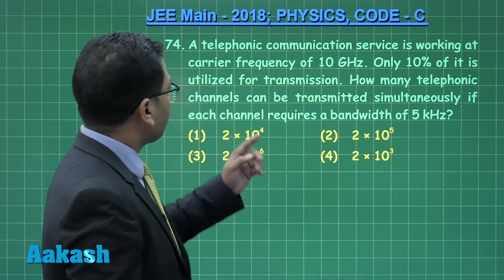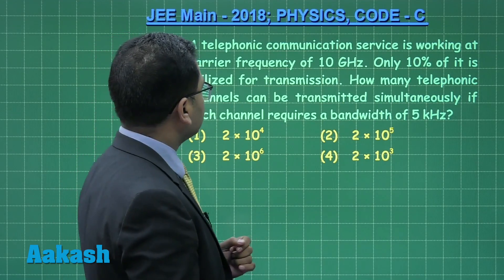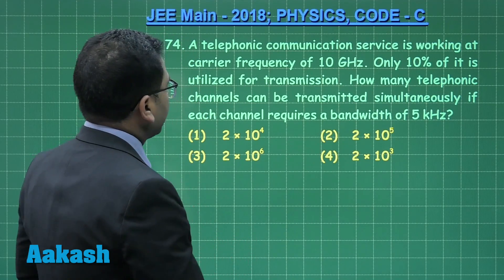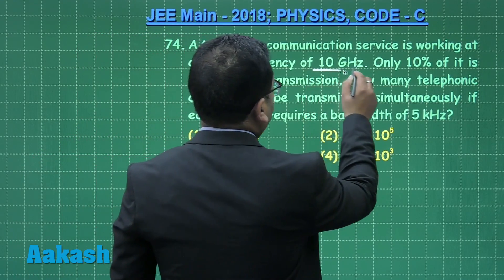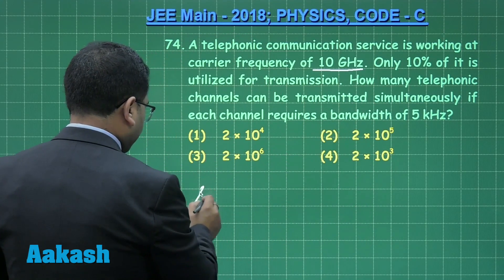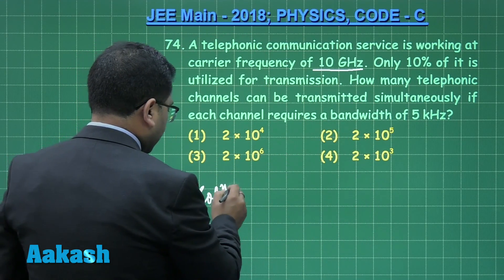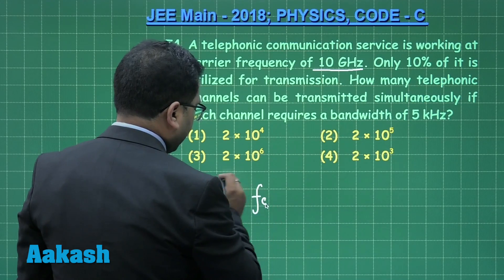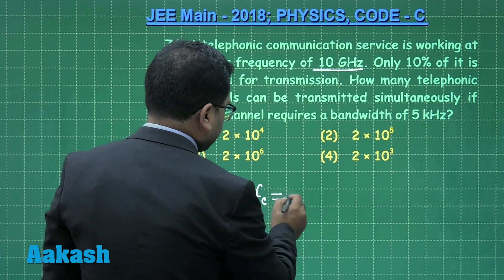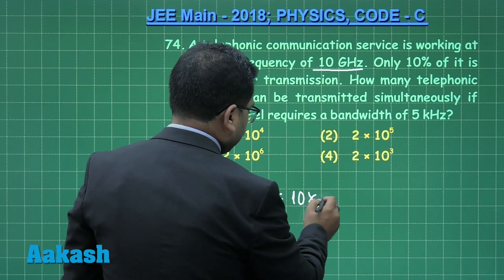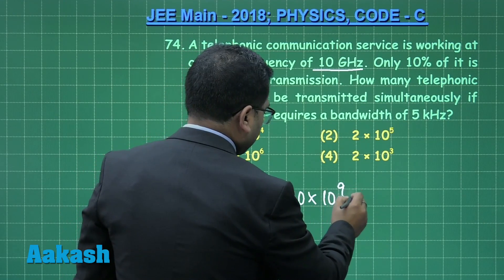Now, let's say a telephonic communication service is working at a carrier frequency of 10 gigahertz. So if we see the solution, the carrier frequency F_C is 10 gigahertz, that is 10 times 10 raised to the power 9 hertz.